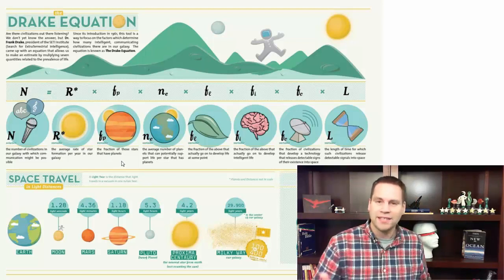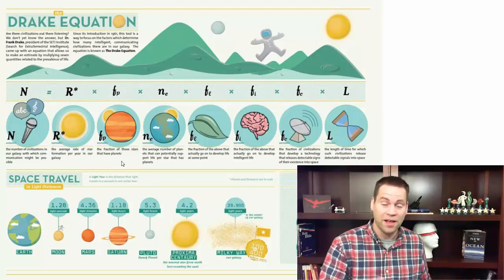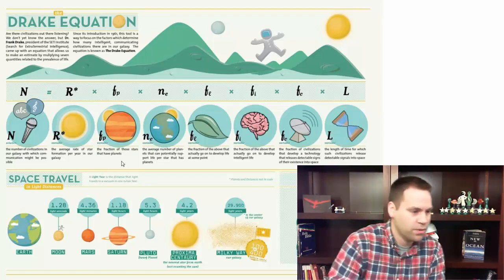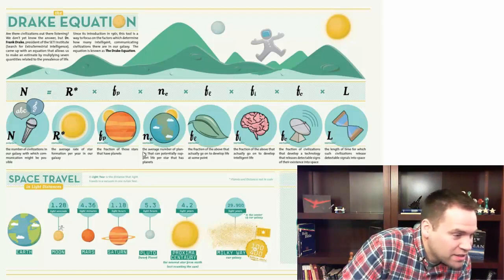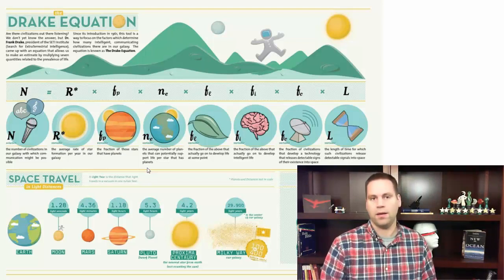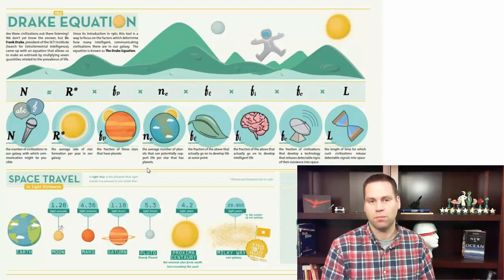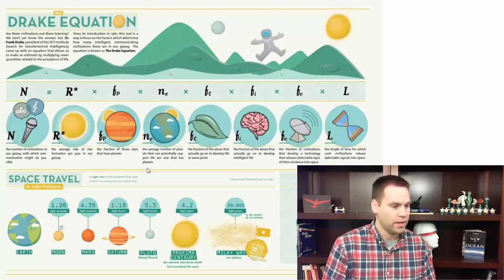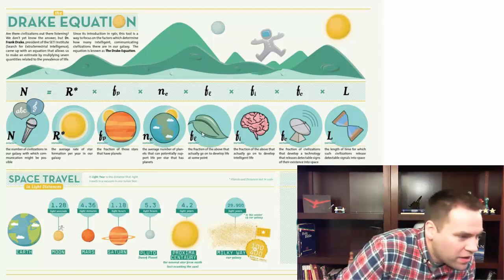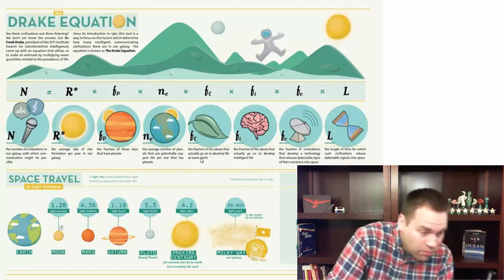The fraction of those stars that have planets is something we've now measured pretty well with space missions like Kepler — this has only very recently been measurable. Prior to that we would just guess. After that, the next fraction is the average number of planets that can potentially support life per star that has planets. In our solar system, there's only one.